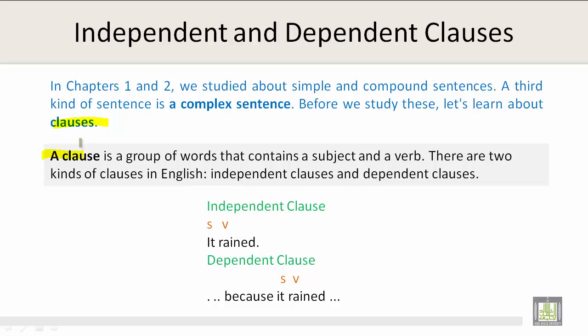A clause is a group of words that contains a subject and a verb. There are two kinds of clauses in English: independent clauses and dependent clauses. Let's take a look at the independent clause: 'It rained.' Subject, verb. And the dependent clause: 'Because it rained.' Subject, verb.